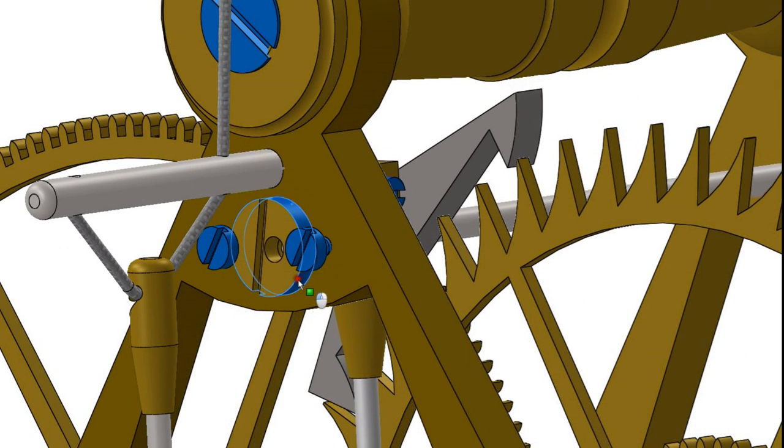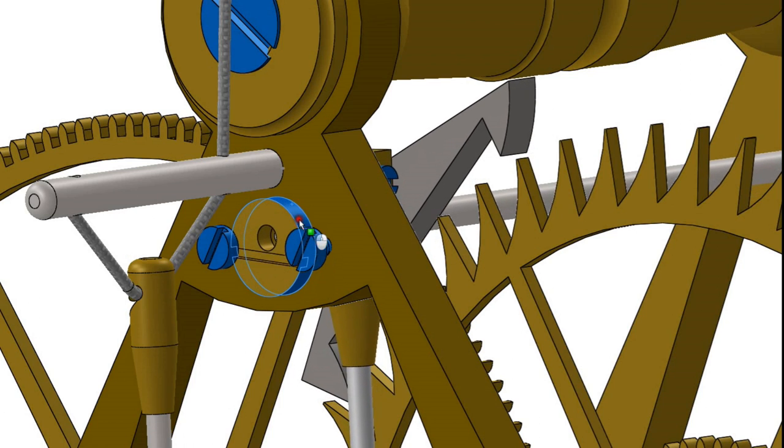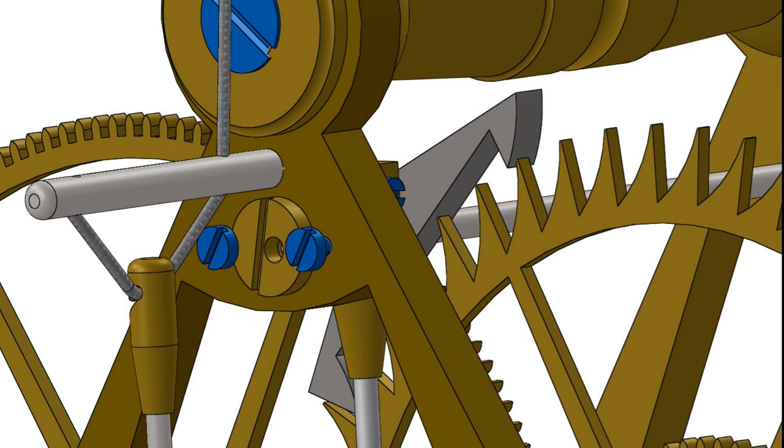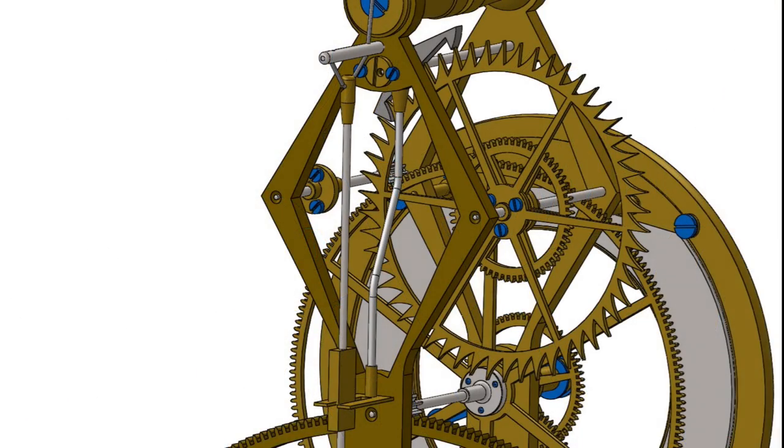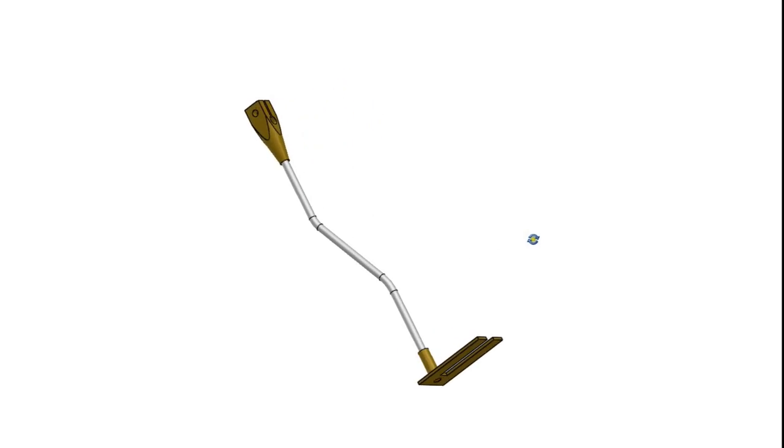There's an eccentric bushing that permits a small adjustment of the pallet depthing with the escape wheel, enabling fine tuning of the escapement. And then there's the crutch assembly, which receives the energy released by the escapement and transmits it to the pendulum to keep it moving.